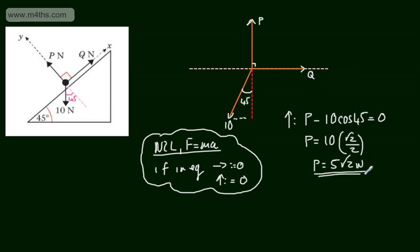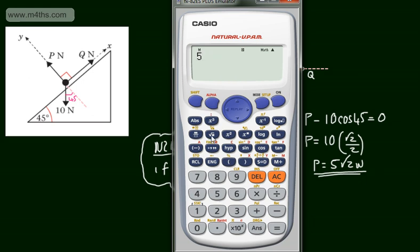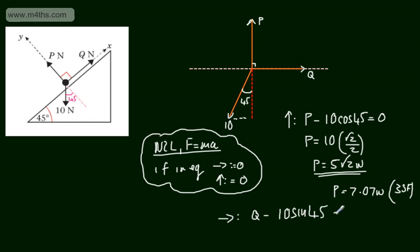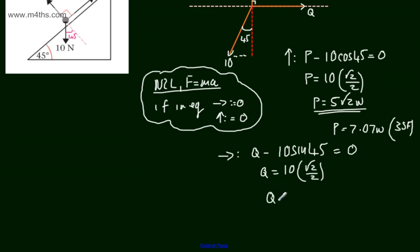If you wanted to find that as a decimal answer, 5 root 2 gives 7.07, so P equals 7.07 Newtons to three significant figures. If we now find Q, we resolve horizontally: Q minus the horizontal component of the 10N force equals zero. The vertical component was 10 cos 45, so this horizontal component is 10 sine 45. Q equals 10 times root 2 over 2, giving 5 root 2 Newtons, so Q equals 7.07 Newtons to three significant figures.